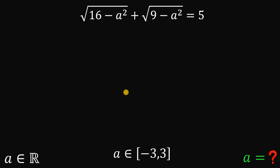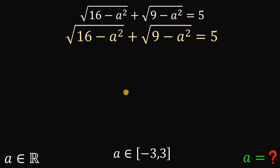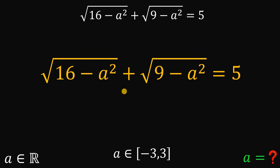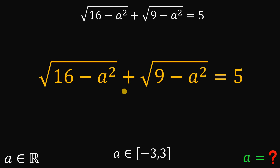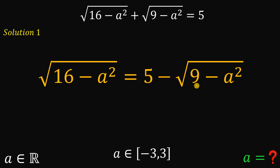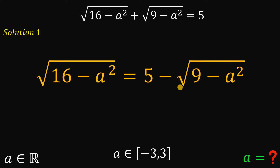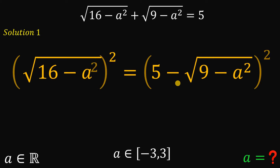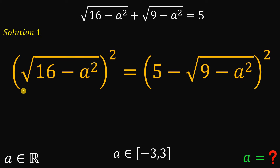Let's have our first solution. What we're going to do is to subtract square root of 9 minus A squared from both sides. Then we square both sides to eliminate the square root.